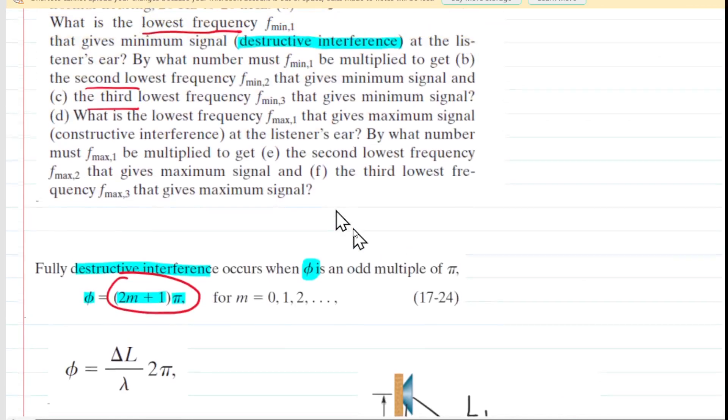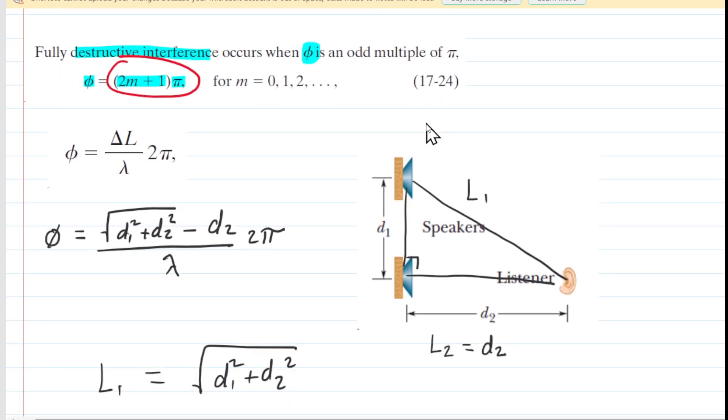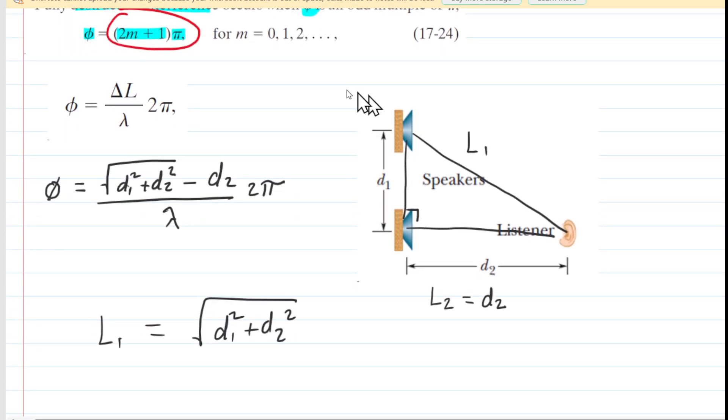In the next few parts of the question, we're dealing with constructive interference. Because look, in part d, it says the lowest frequency that gives a maximum signal. A maximum signal would be constructive interference, as indicated in the parenthetical remark right there. So we're going to basically proceed in the very similar way, except for constructive interference. So let's take a look at how we can do that.